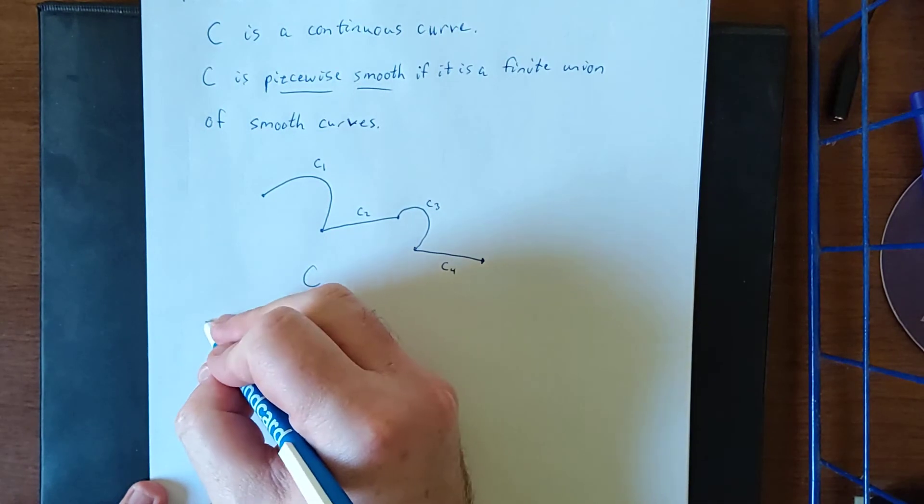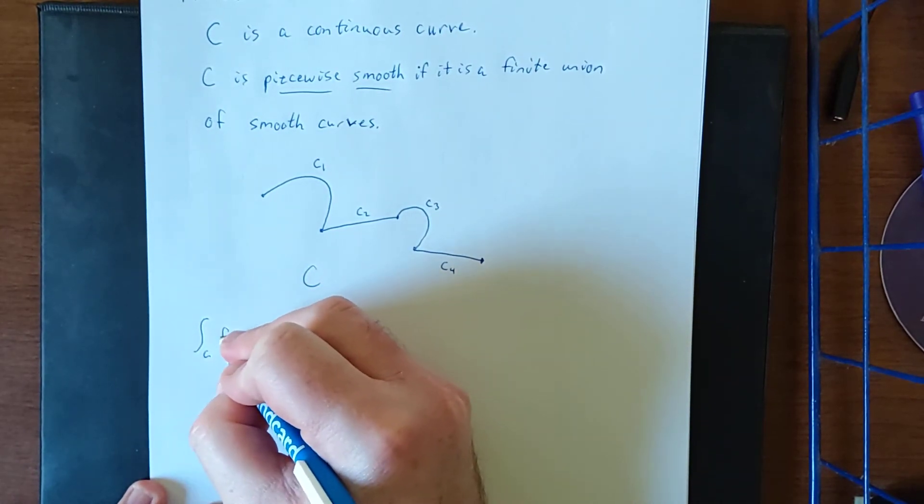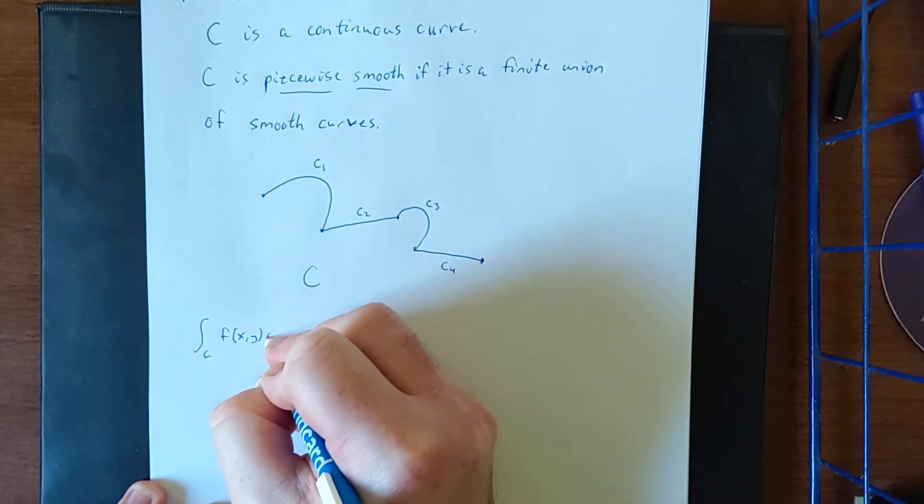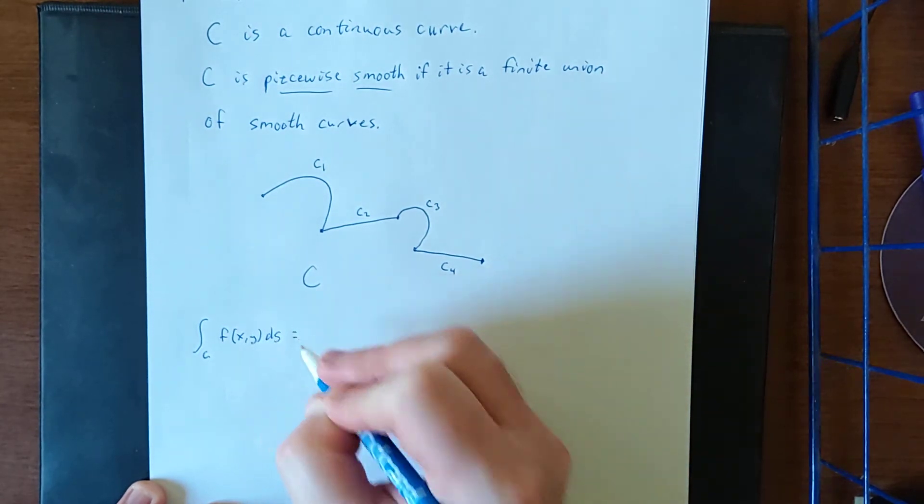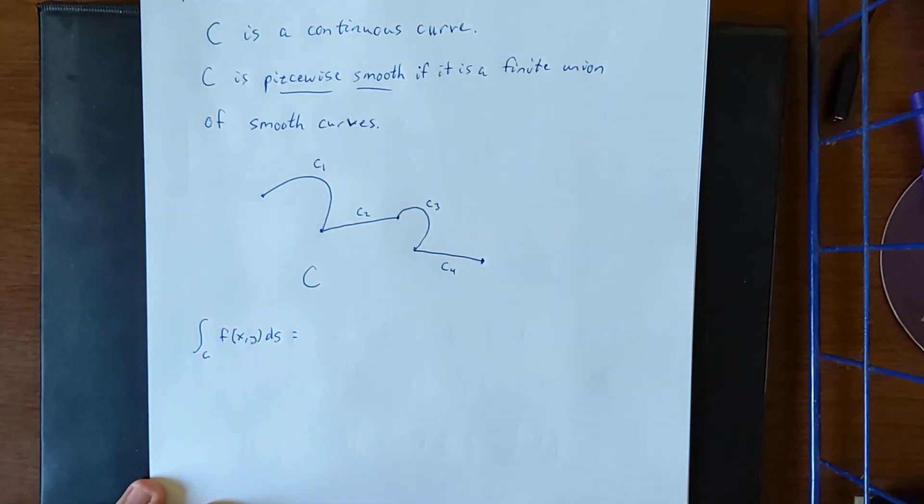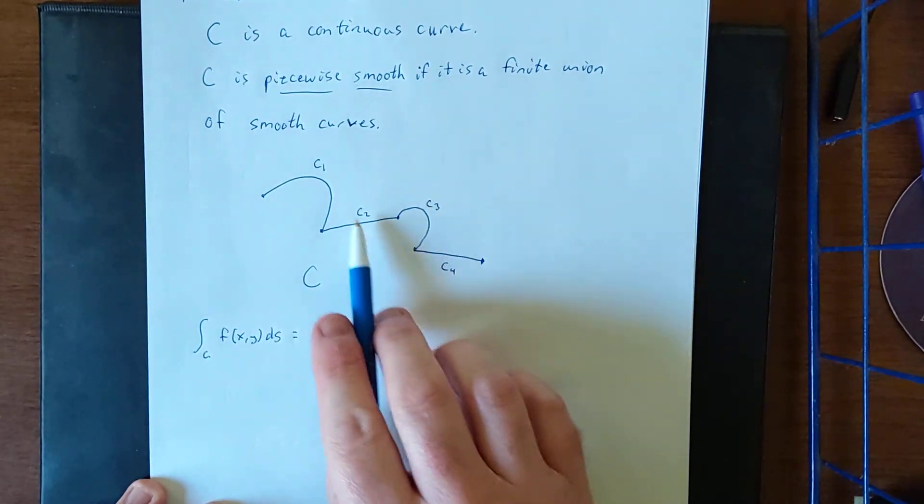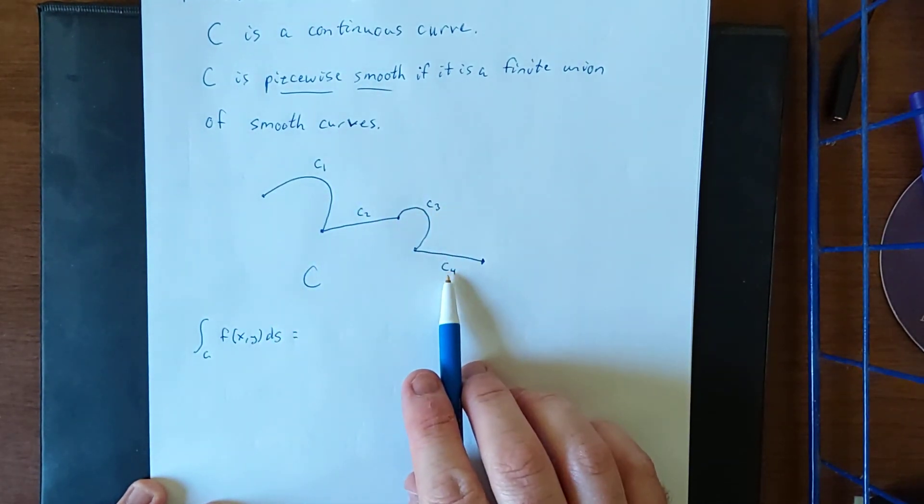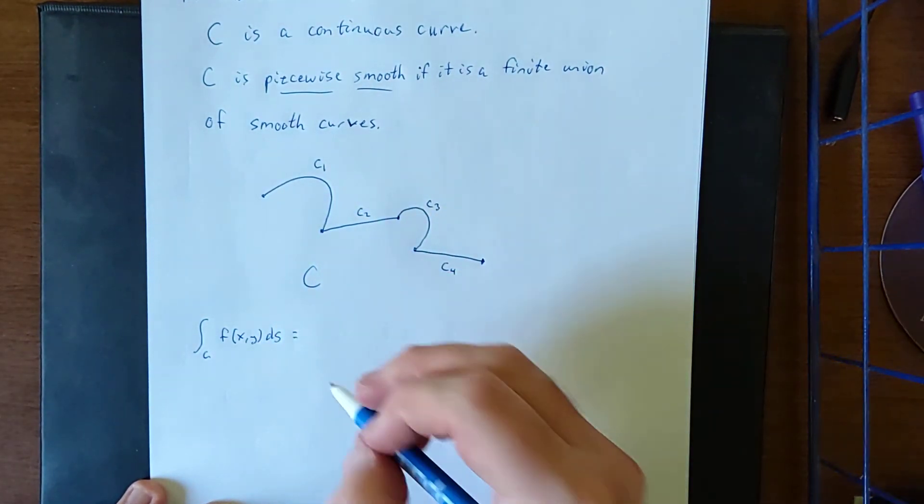So with that in mind, if I were to give you something like the line integral over the curve C of f of xy ds or dx or dy, whatever the differential happens to be, I can break this into these four different piecewise smooth curves so that I can use a different parameterization for all of them.